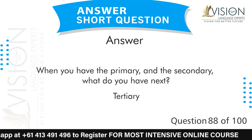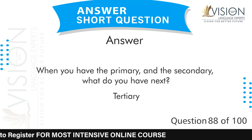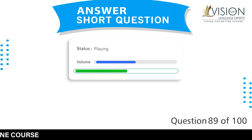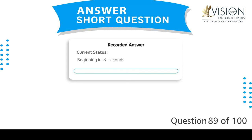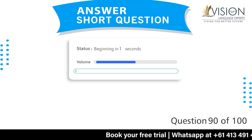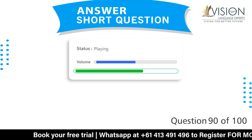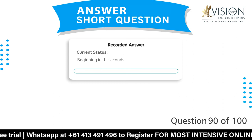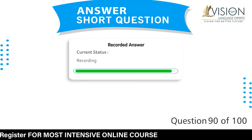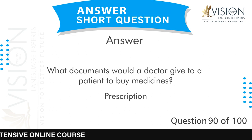When you have the primary and the secondary, what do you have next? Tertiary. What kind of educational institution does a 10-year-old child study in? Primary school. What documents would a doctor give to a patient to buy medicines? Prescription.